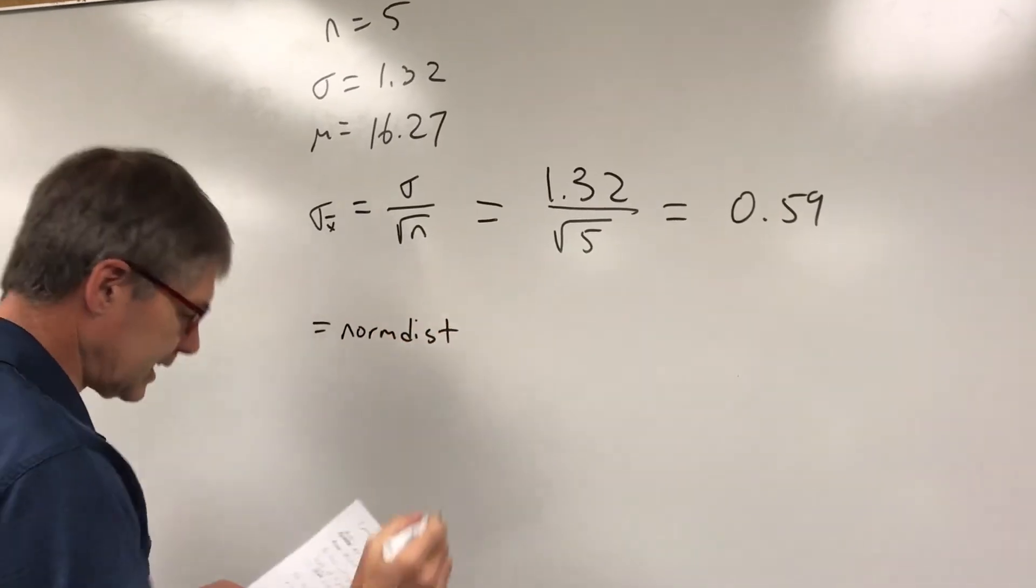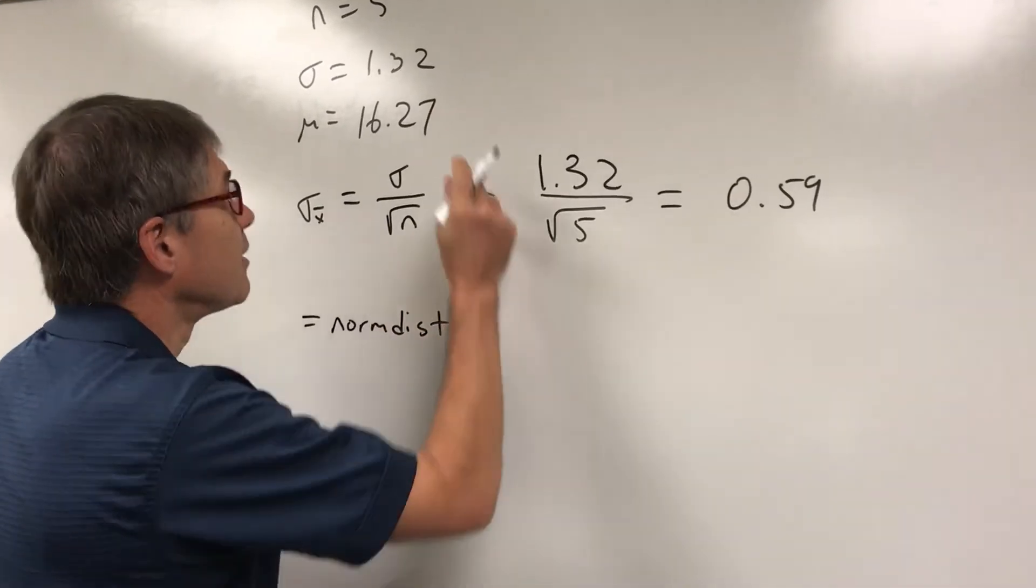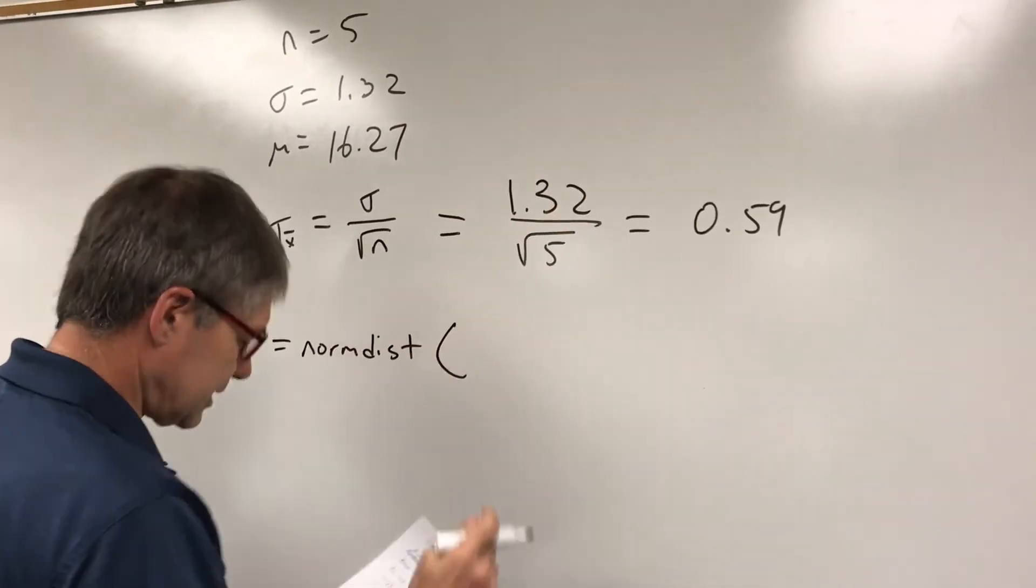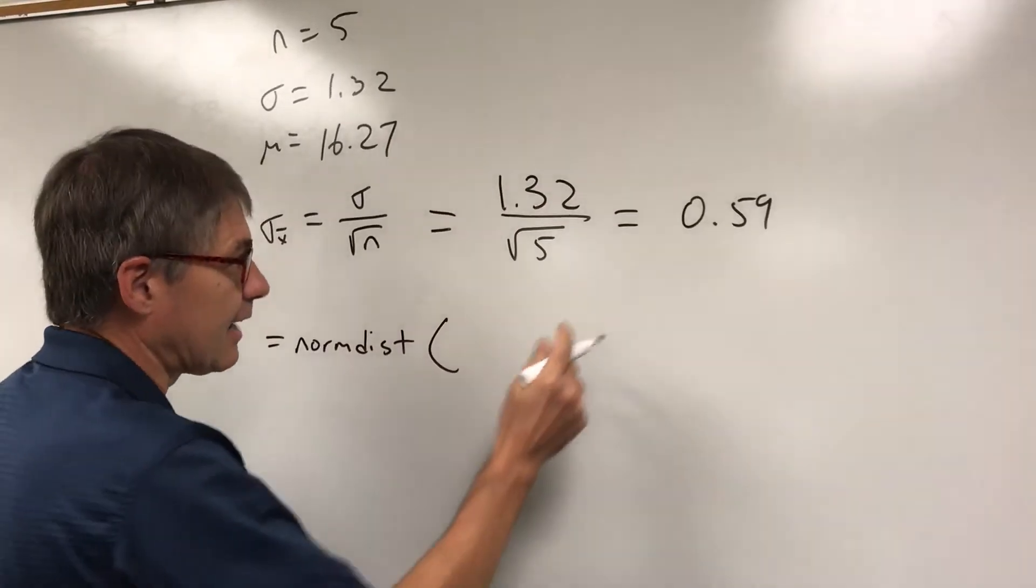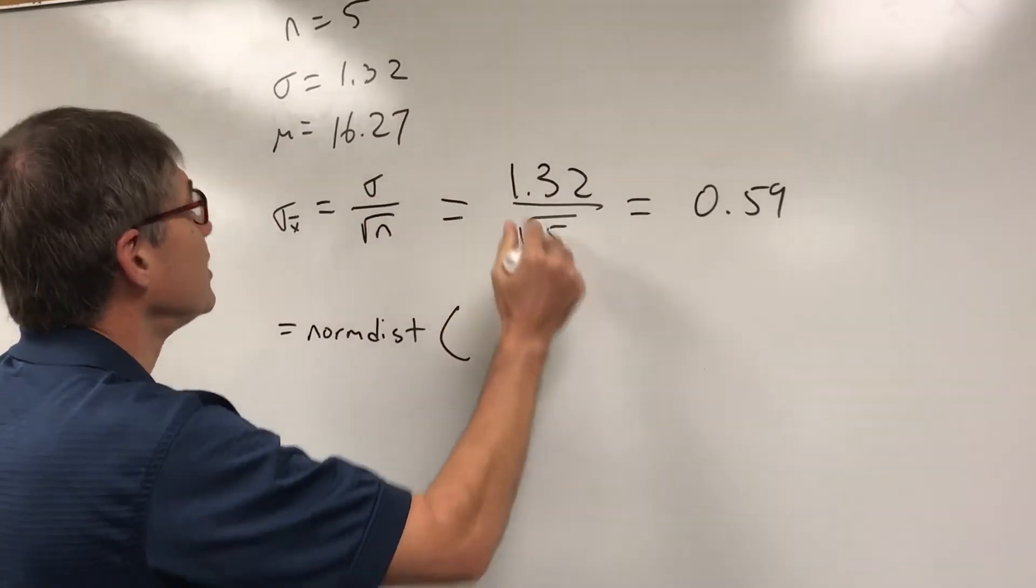It's the norm.dist and instead of putting in my plain x, I put in my x average which is the new number.